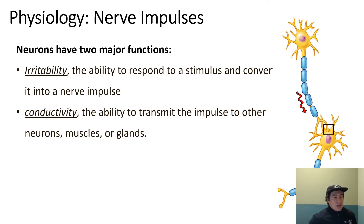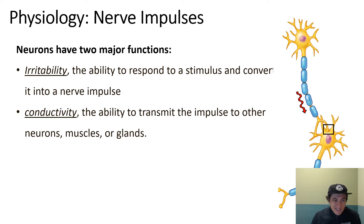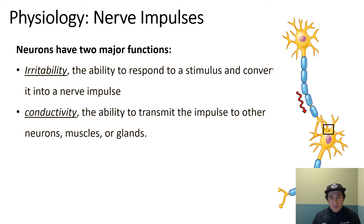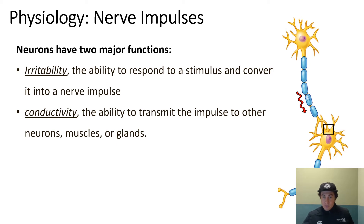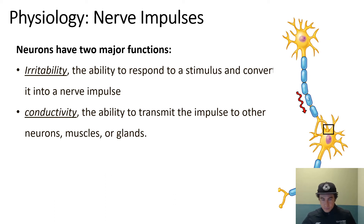Nerve impulses are the electrical messages sent along your neurons. Neurons have two major functions. First, irritability — the ability to respond to a stimulus and convert it into a nerve impulse. Think of someone who is irritable; you don't have to do a lot to create some kind of output. Second, conductivity — the ability to transmit the impulse to other neurons, to muscles, and to glands. These two functions make up what is possible from a neuron.